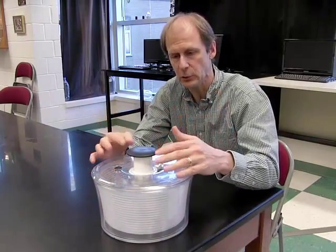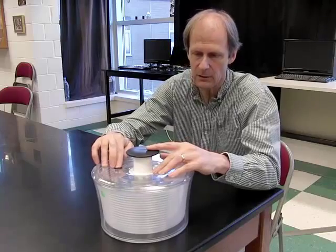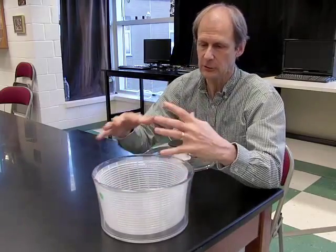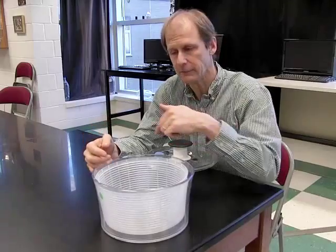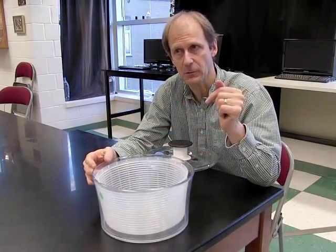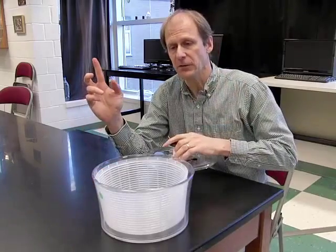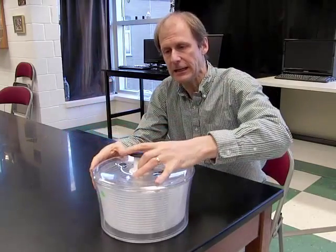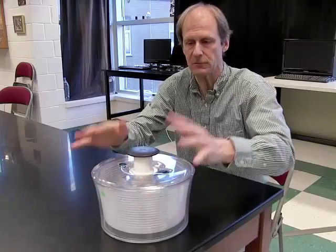And when you end up stopping the basket, then your lettuce is practically dry from simply flinging off the water droplets as they spin around in a circle. So that's the salad spinner. And it's a kitchen centrifuge for drying your lettuce.